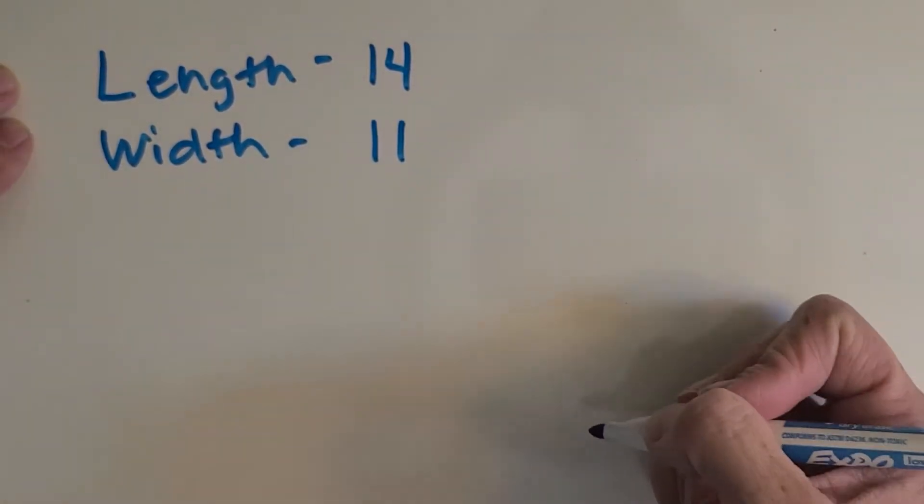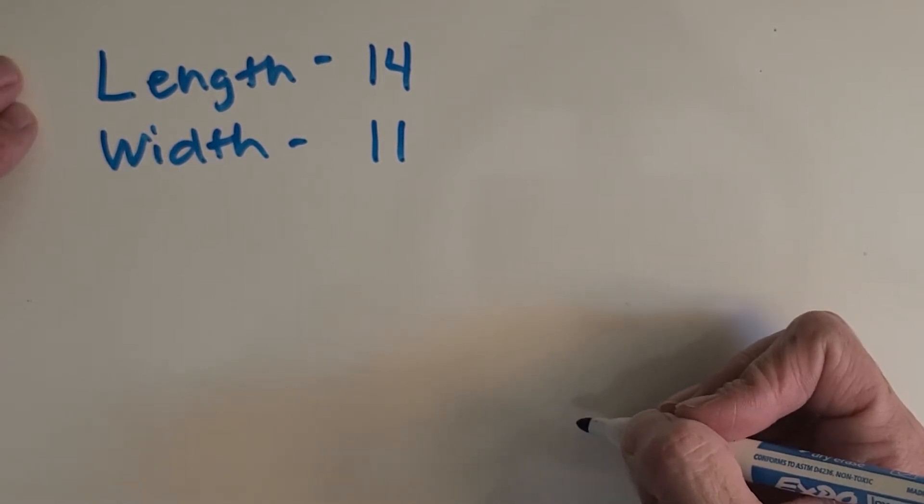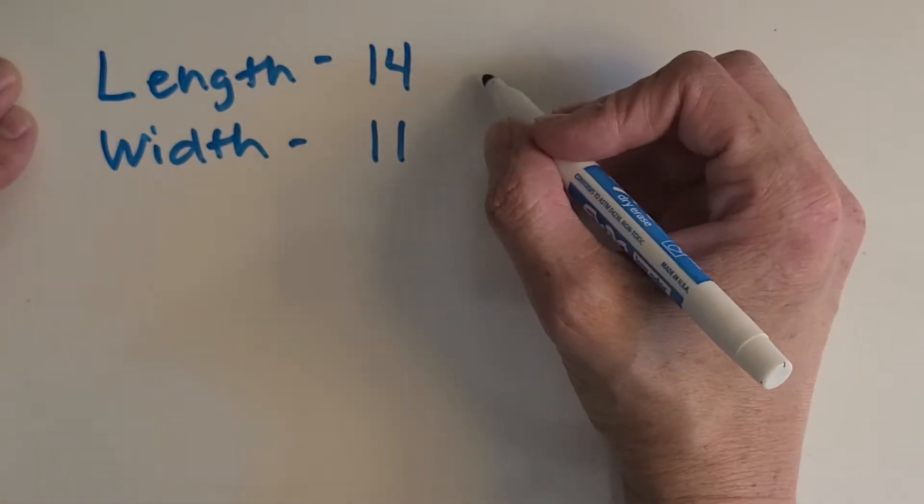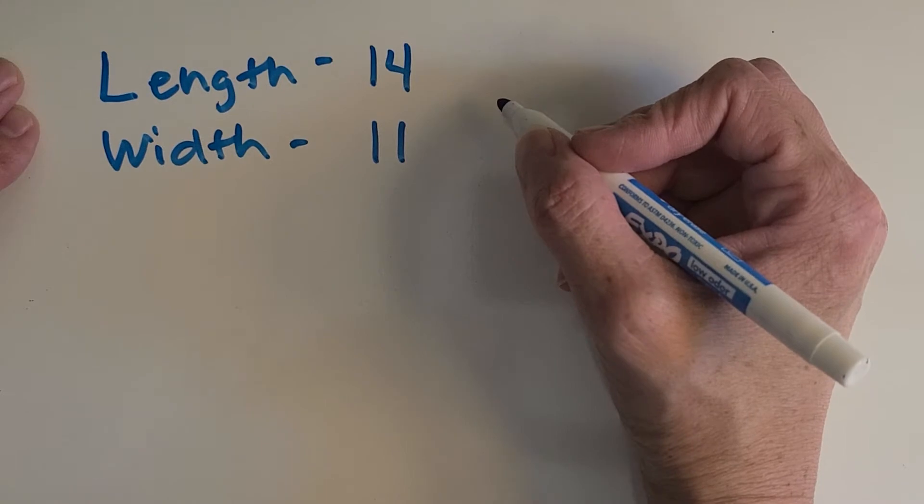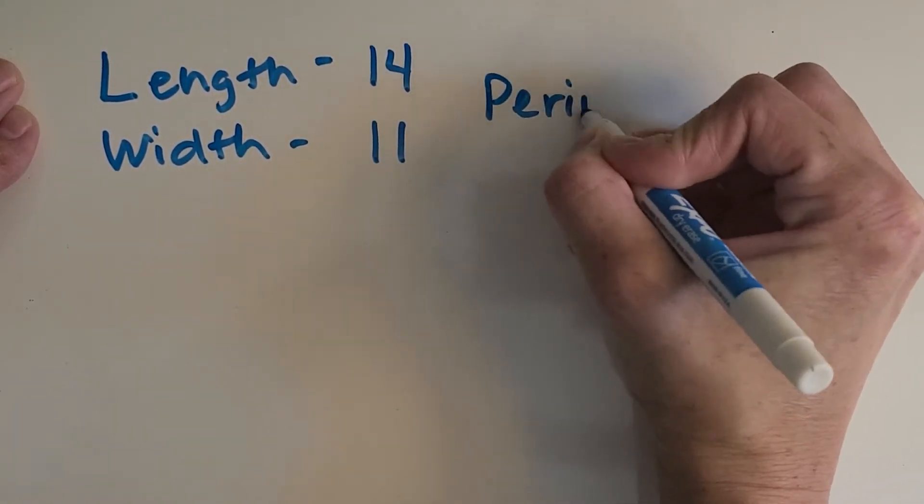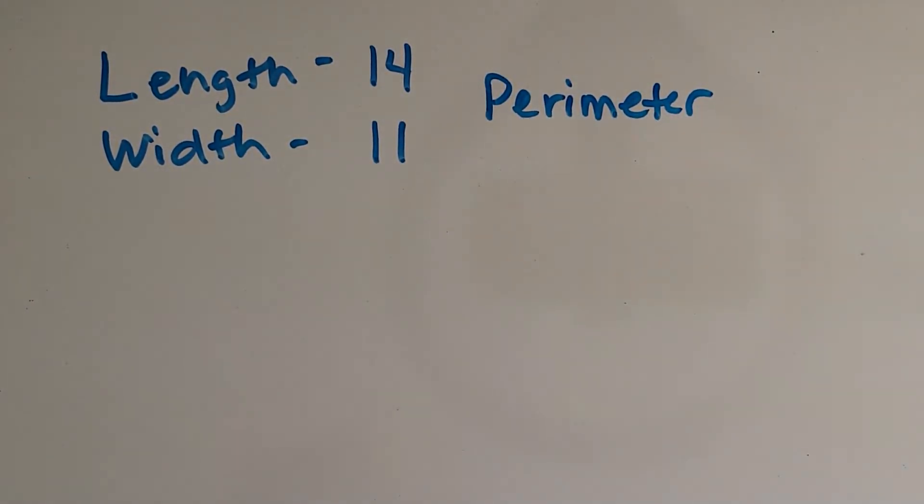Okay, so first I want us to try to figure out the distance around this camel enclosure. And what is that called? Is that perimeter or area if I want to know the distance around? Okay, you got it. We want to know the perimeter. Okay, why don't you pause the video and see if you can find the perimeter. Then we'll come back and check your work.